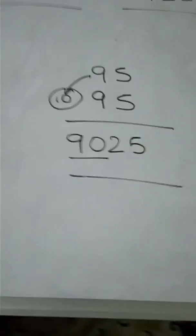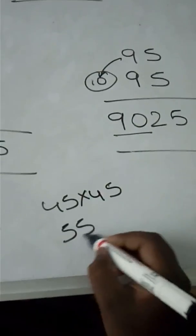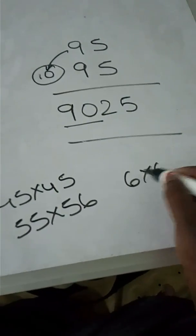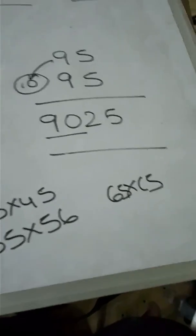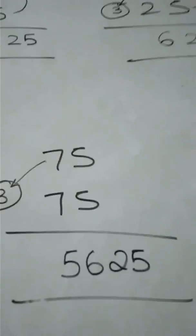By using this, you can calculate 15 square, 25 square, 35 square, and 75 square, and also 45 into 45, 55 into 55, 65 into 65, whatever it may be. You can calculate by using this formula.